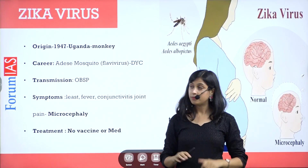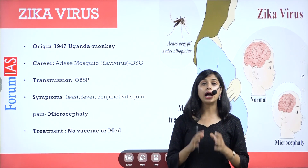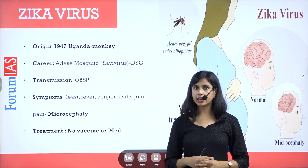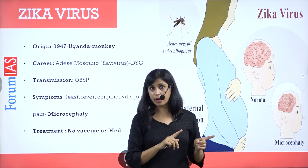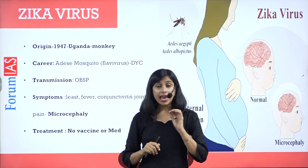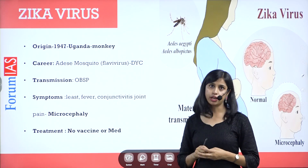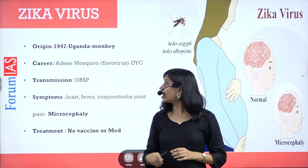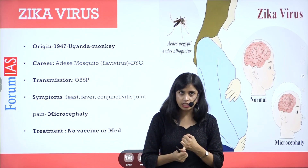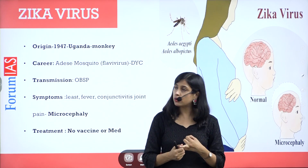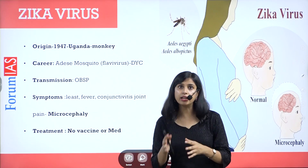Now let's talk about Zika virus. Zika virus was first found in 1947 in Uganda in monkeys. Then in the 1970s, it was also seen in human beings. For a change, the carrier here is not bats — it is Aedes mosquitoes, the same mosquitoes responsible for Dengue and Chikungunya. Transmission can occur in 4–5 ways: direct fluid contact, organ transplantation, blood transfusion, sexual contact, and from mother to fetus during pregnancy.